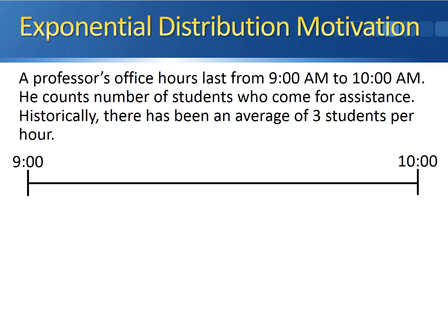Let's use the same example for motivation for the exponential distribution as we did for the Poisson distribution. A professor's office hours last from 9 to 10 a.m. He counts the number of students who come in for assistance, and he knows that historically there's an average of three students per hour. He can look at the clock and see what time each of his students comes in for help.